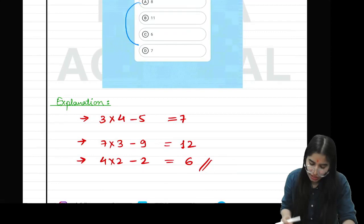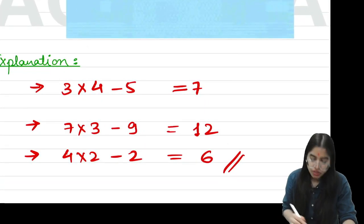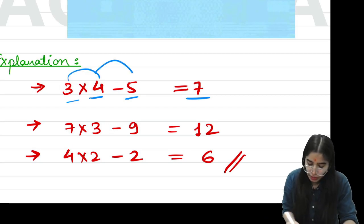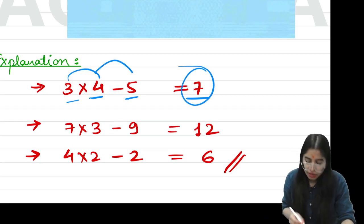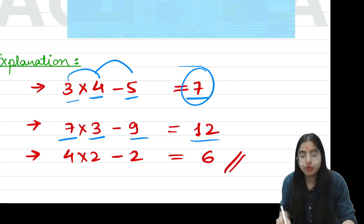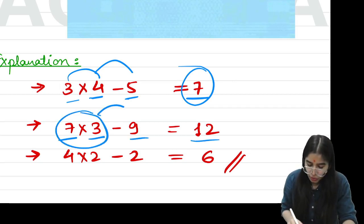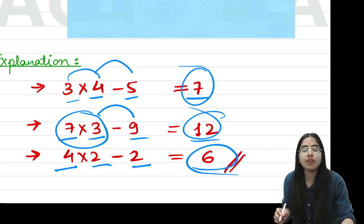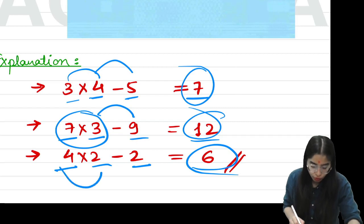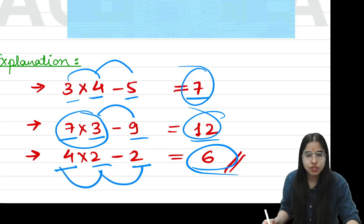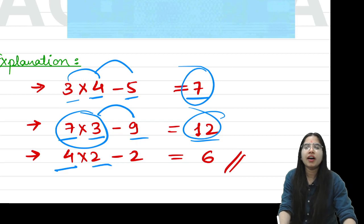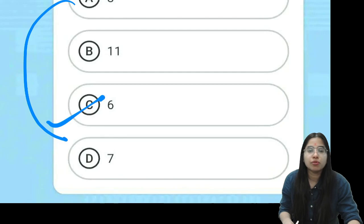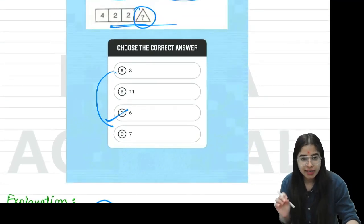Let's see what the answer is. In the first figure, the four numbers are 3, 4, 5 and 7. If you do 3 into 4, you get 12. 12 minus 5 equals 7. Similarly, the second figure has 7, 3, 9 and 12. So 7 into 3 is 21, and 21 minus 9 equals 12. In the last figure with the missing number: 4 into 2 is 8, and 8 minus 2 equals 6. So the correct answer is option C, which is 6. I hope everybody is crystal clear.